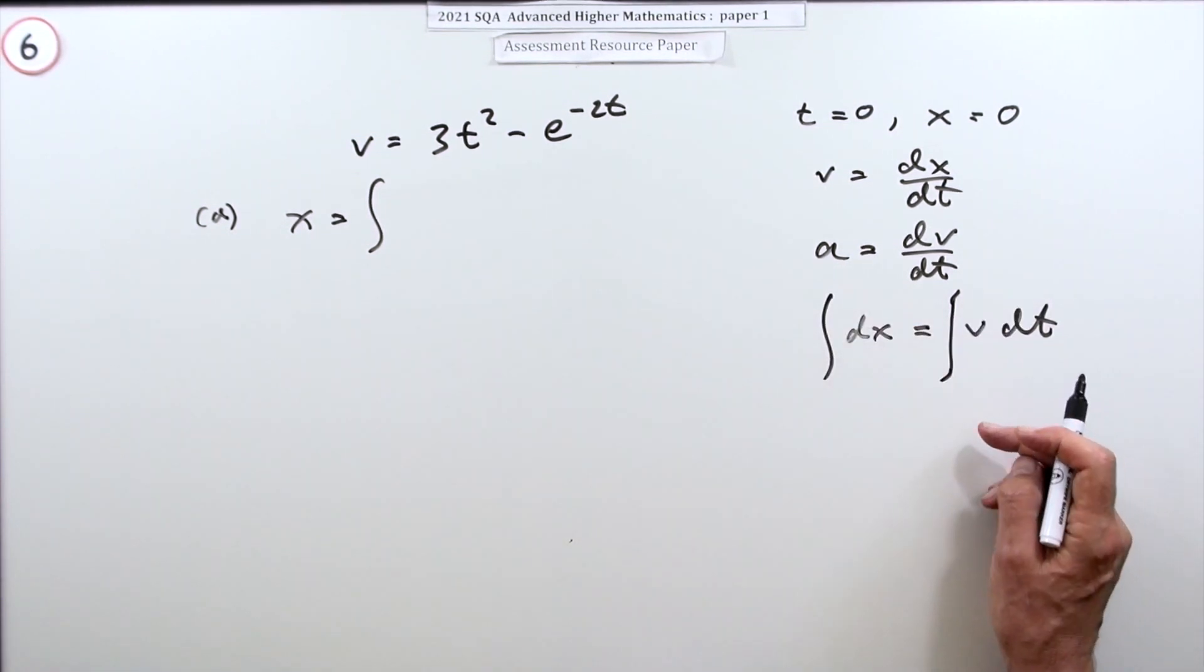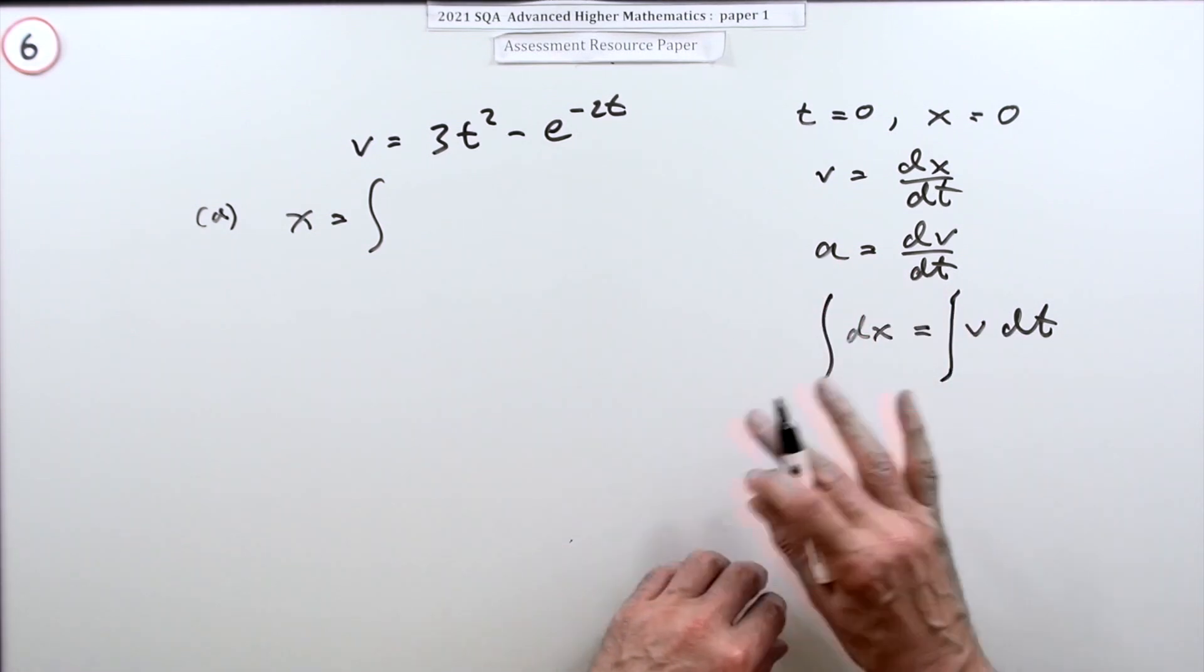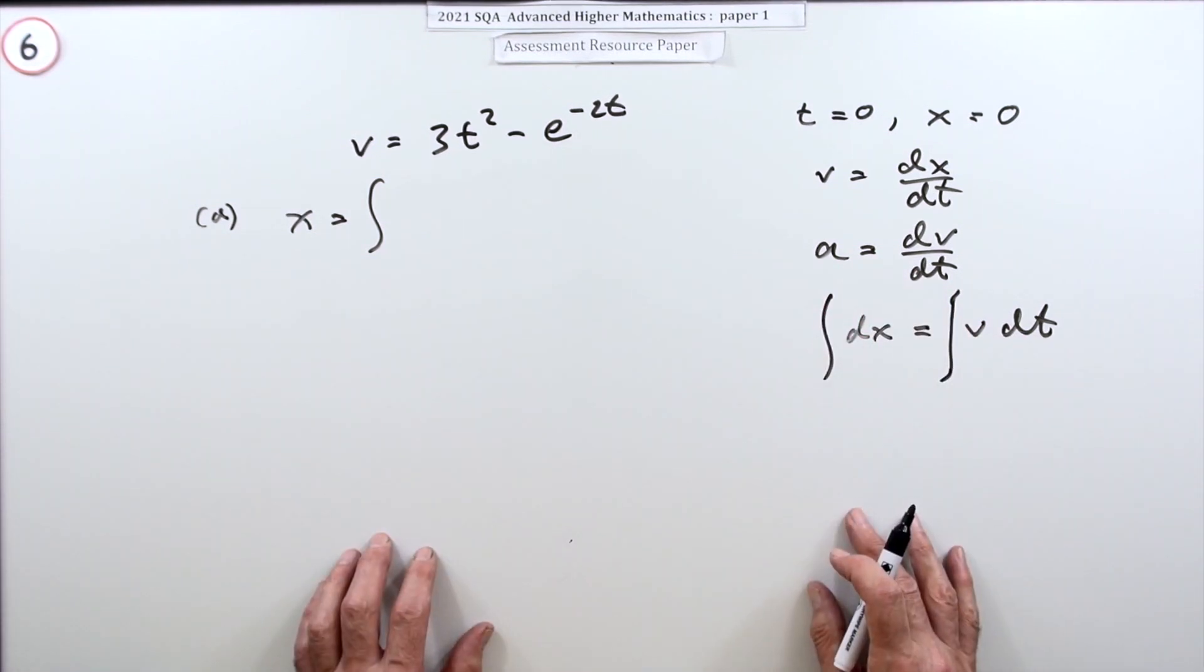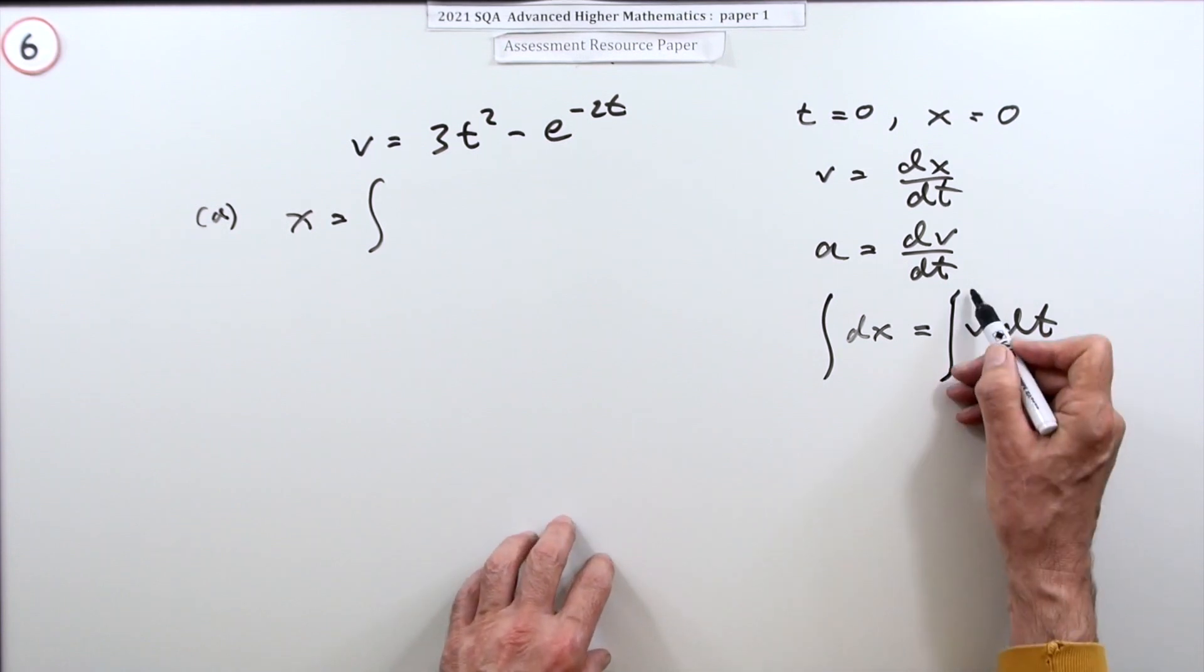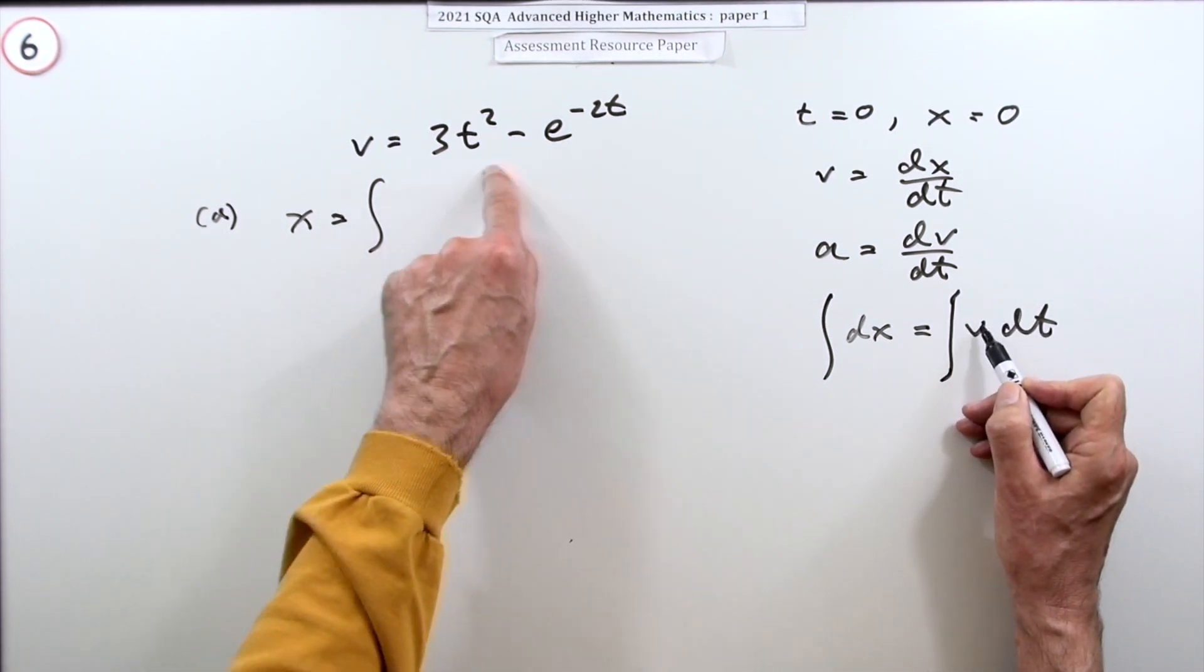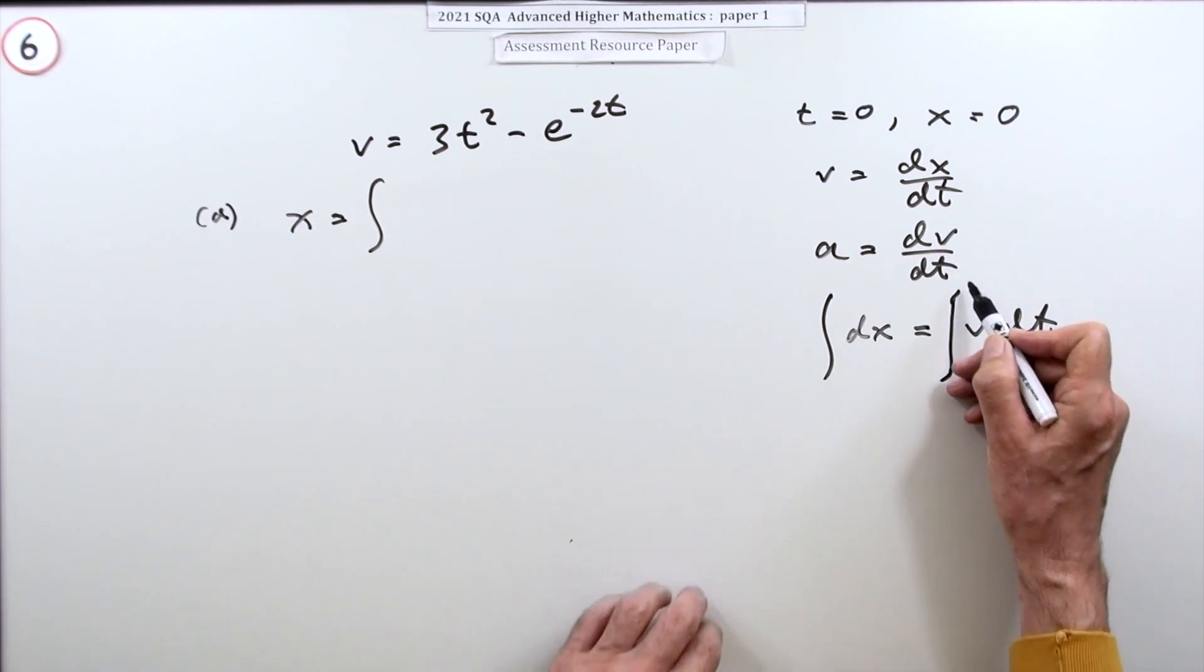Then you could put in values like from zero to x and zero to t, and that would give you the general form without having any constants mentioned. The only problem is you get this clash of letters.